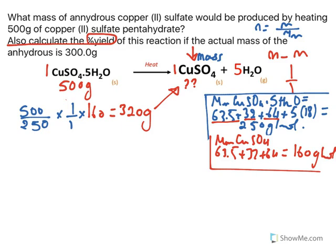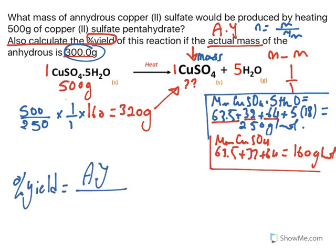Now if we continue reading the question, it says also calculate the percent yield of this reaction if the actual mass, which is the actual yield of the anhydrous, is 300 grams. So in reality when they did this experiment, they didn't obtain 320 grams, they just obtained simply 300 grams. What would be the percent yield?